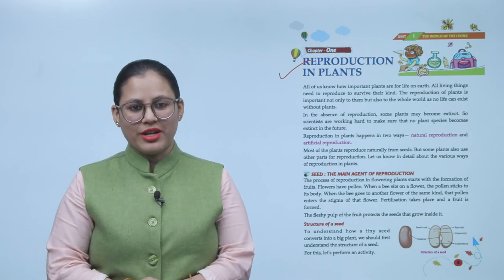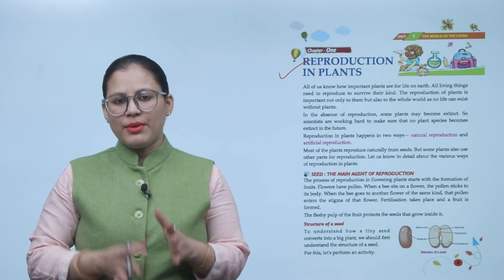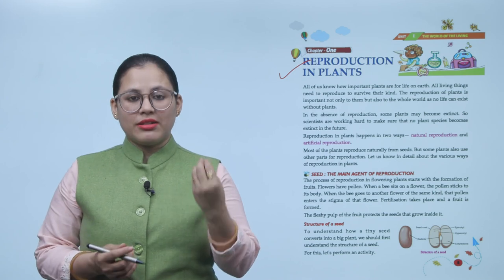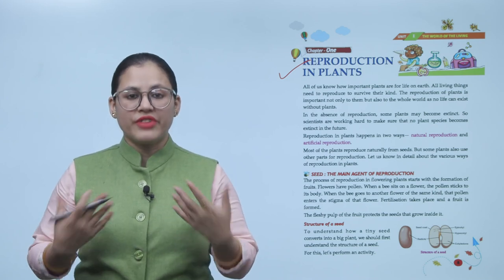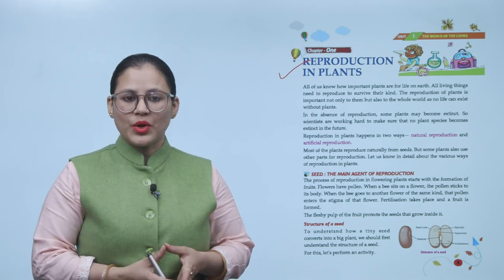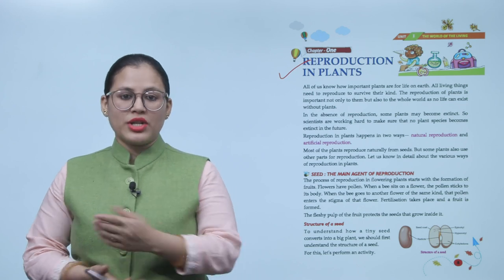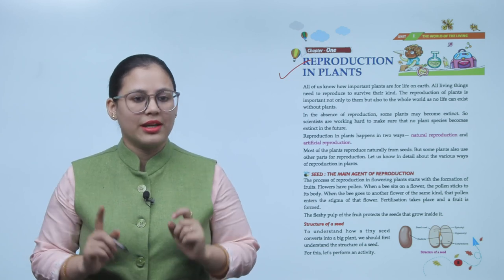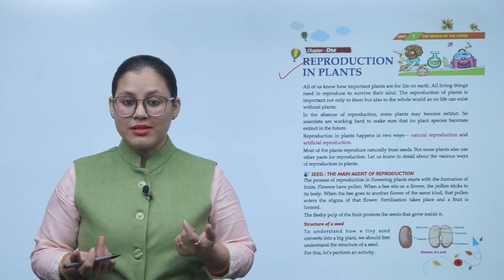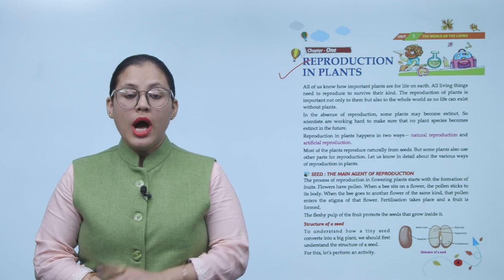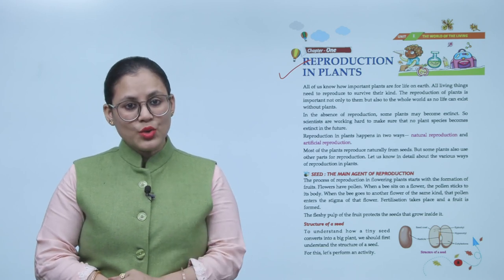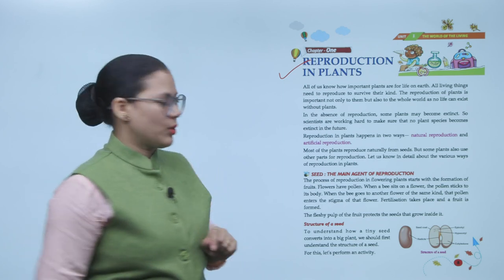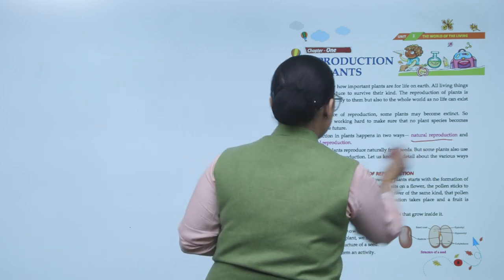Reproduction in plants happens in two ways: natural reproduction and artificial reproduction. Plants humari liye kitna important hai - agar is earth mein life possible hai, hum survive kar pare, just because of plants. Agar reproduction nahi hoga to plants extinct ho jayenge, right?